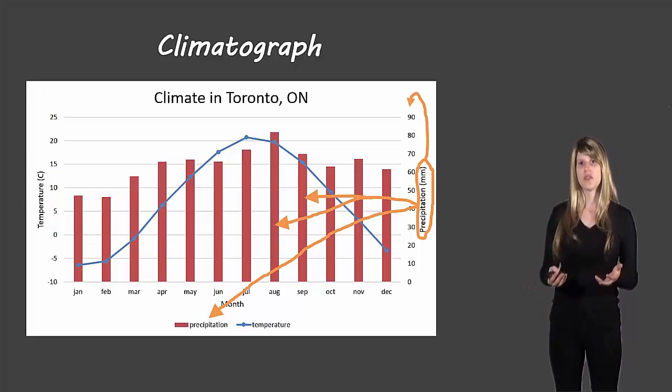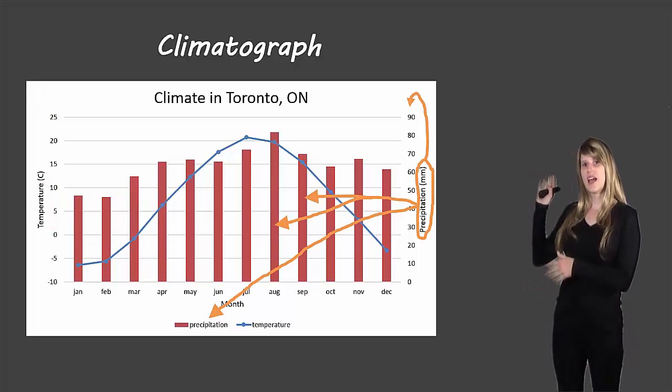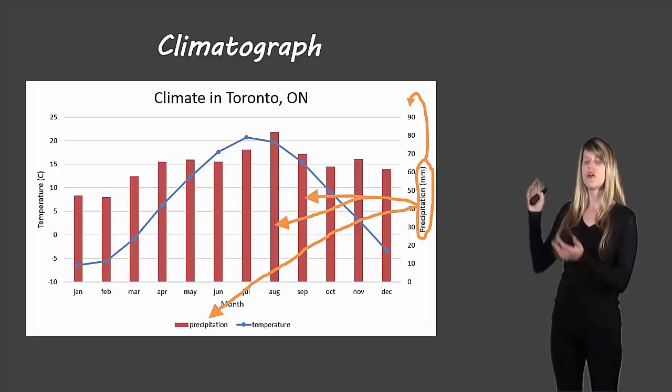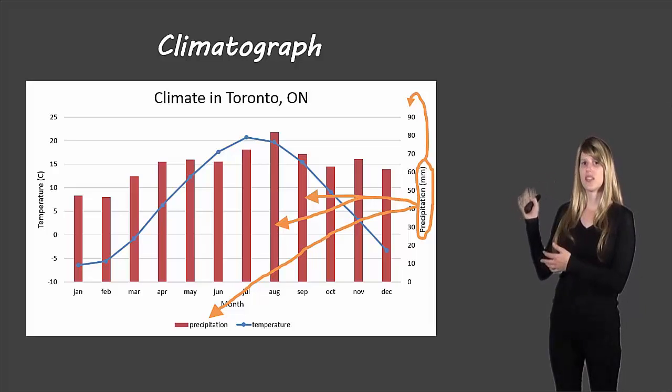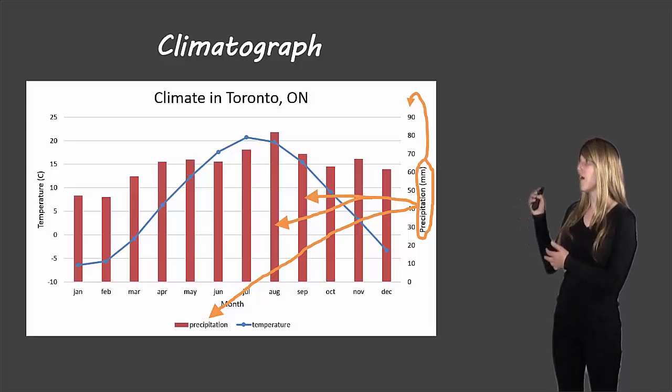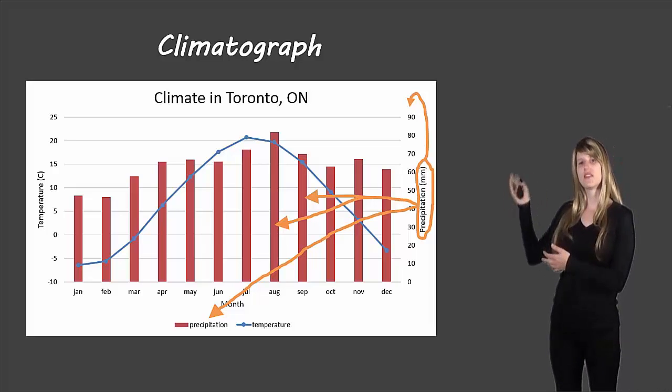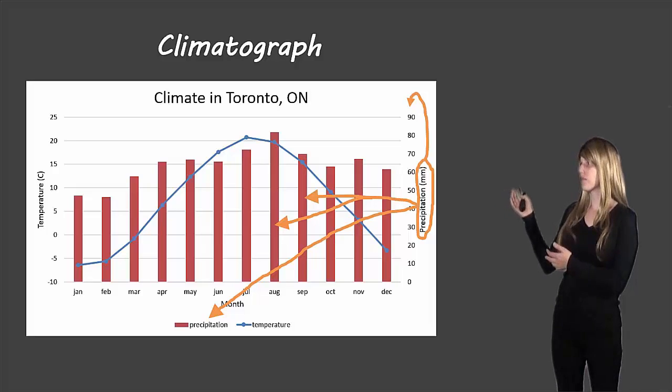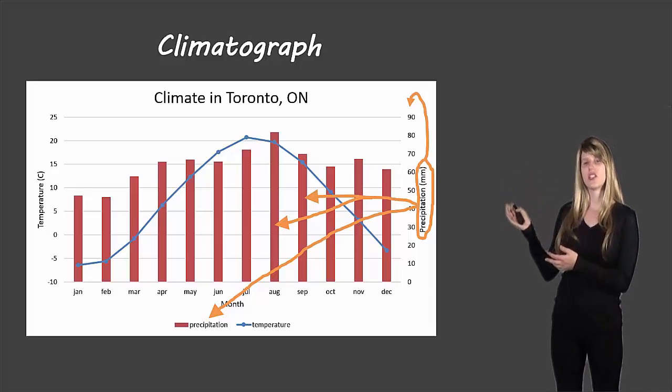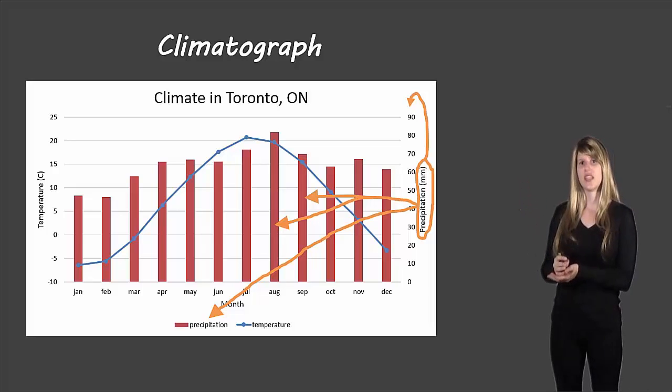Similarly, with precipitation, the right axis is always precipitation. That's the rule, but we still need to write precipitation as an axis label, and we use millimeters for the units. Those need to be included. Even though we know that the bars indicate precipitation, we're still going to put a legend there that shows bars indicate precipitation.